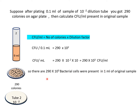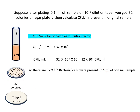So there are 290 into 10 power 3 bacterial cells present in 1 ml of the original sample. In the similar way, you can calculate the CFU per ml present in test tube number 3 having dilution 10 to the power minus 3. Suppose after plating 0.1 ml of sample of the 10 to the power minus 3 dilution tube, you have got around 32 colonies on the agar plate.